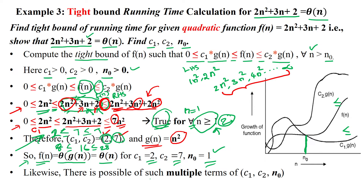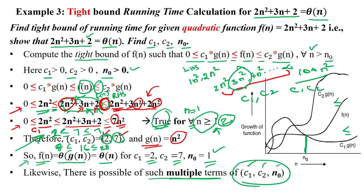There is also the possibility of multiple valid terms — combinations of different c1, c2, and n0 for each function. For example, taking 3n² or 100n² on the right side gives different c1 and c2 values. That's why we say there is the possibility of many valid constant combinations based on the chosen g(n). Thanks for watching.